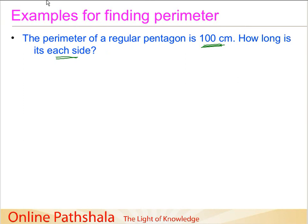Now here we are given the perimeter but we need to find out the length of the side. So first let's quickly make a pentagon and let's try to make a regular pentagon. So it looks like a regular pentagon and the perimeter of this pentagon is 100 cm.